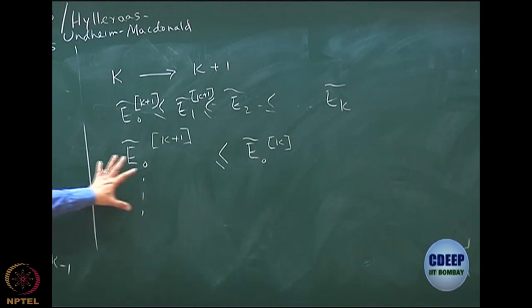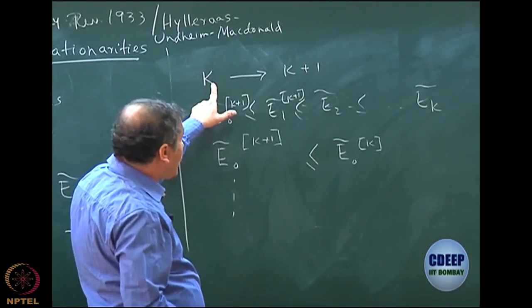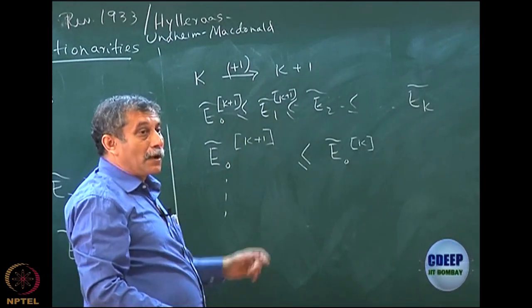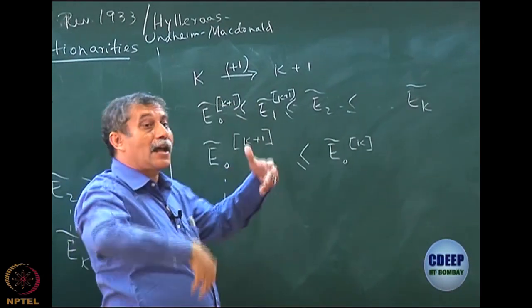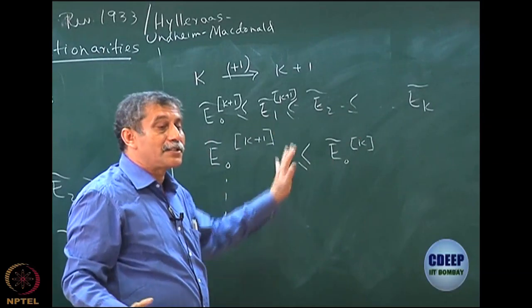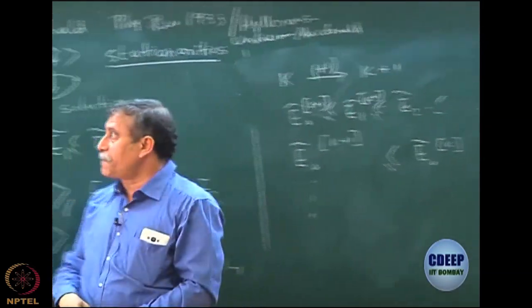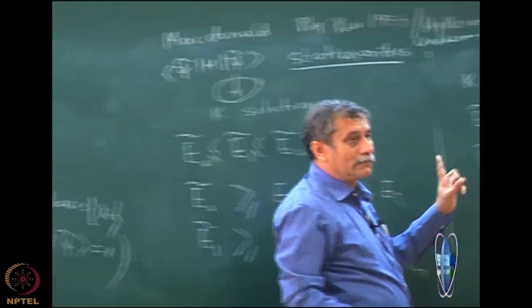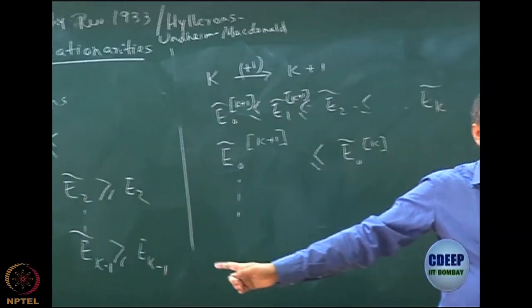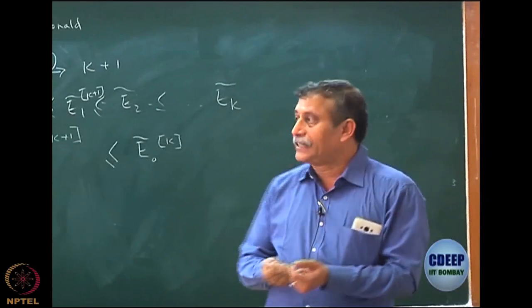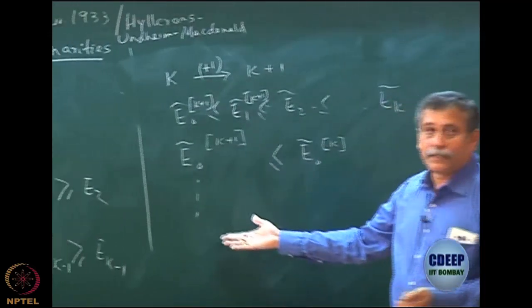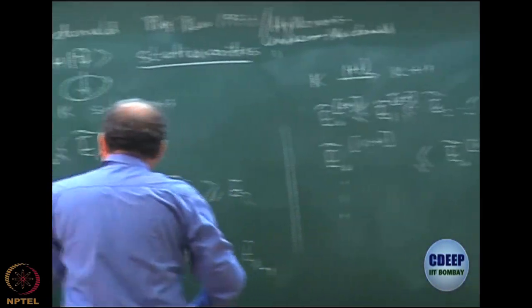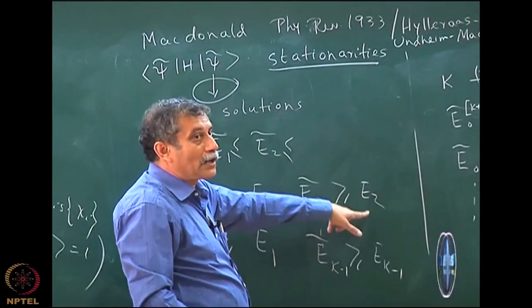So if I add one more function, all the numbers will decrease compared to the previous, but interestingly they will all still be an upper bound. So they will never cross. Let me do a simple calculation. This is E_0, E_1, E_2, E_3. Initially I do a three-dimensional calculation. I will get E_0 tilde somewhere here, and E_1 tilde which must be higher, somewhere here — this is my three-dimensional basis. I have total four solutions and then E_2 tilde which will be higher than E_2, but not necessarily above E_3.